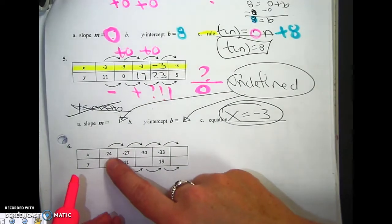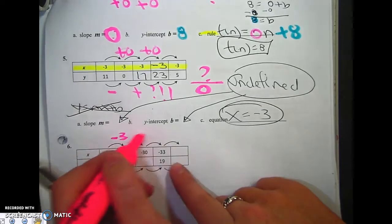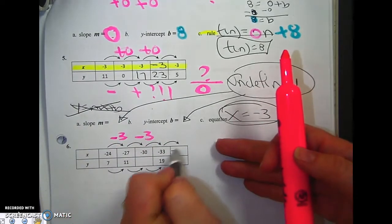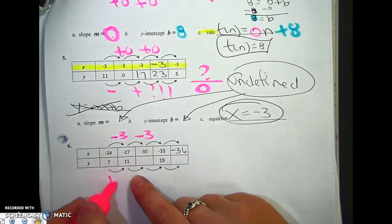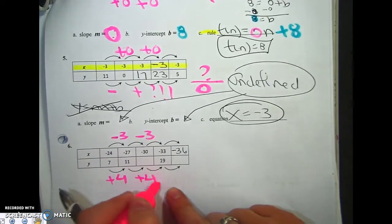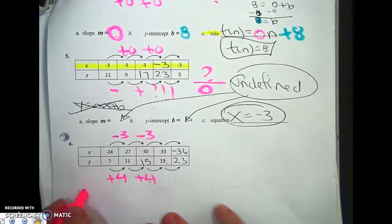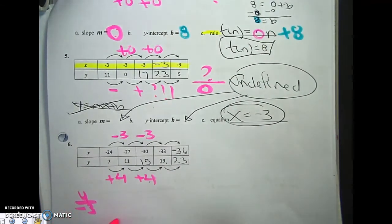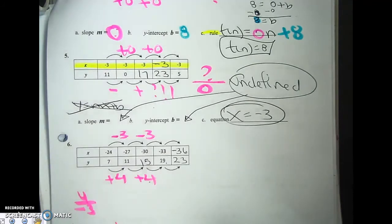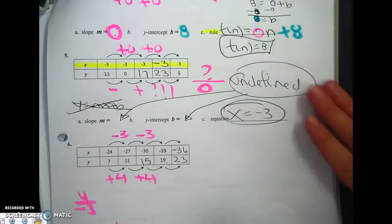Let's go to the next one. I notice the numbers are getting smaller by 3. So that means that's negative 36. This is getting bigger by 4. 19 plus 4 is 23. 4 over negative 3 is negative 4 over 3. My y-intercept, I don't see it.